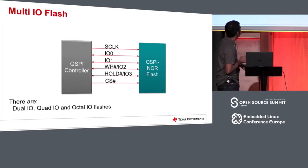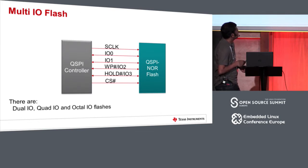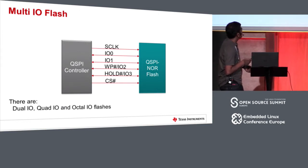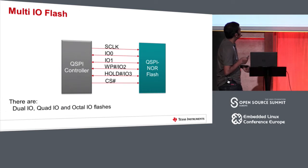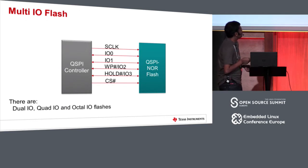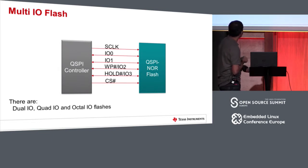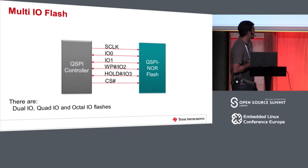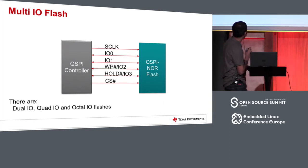This diagram shows a multi-IO flash where there are four bi-directional IO lines connecting controller and the flash. We call the flash a quad SPI flash and the controller a quad SPI controller. In quad mode, the write protect and hold lines double as IO2 and IO3 lines, making it four IO lines. There are also NOR flashes with up to eight IO lines, called octal IO flash, or you could have a NOR flash working with just two IO lines in bi-directional mode — those are called dual IO flash. To summarize, there are dual IO, quad IO, and octal IO flashes.